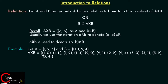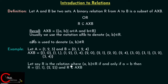The ordered pairs in A cross B are: (1,0), (1,1), (1,2), (1,4), (2,0), (2,1), (2,2), (2,4), (3,0), (3,1), (3,2), (3,4). Let's say R is the relation where (a, b) belongs to R if and only if a is equal to b.